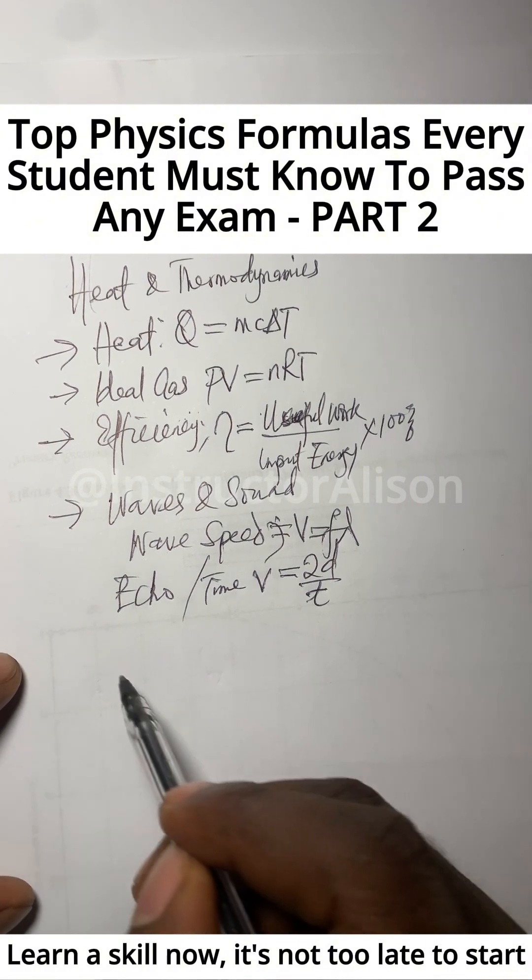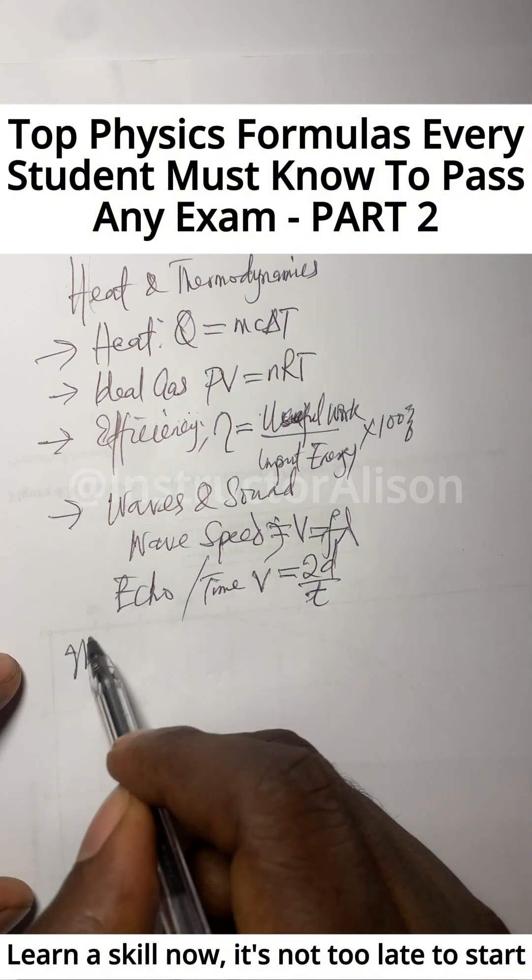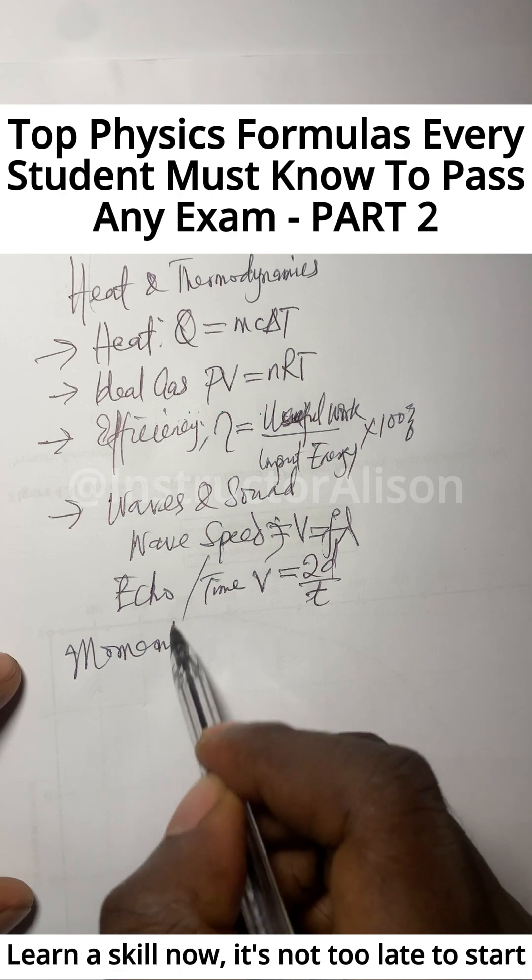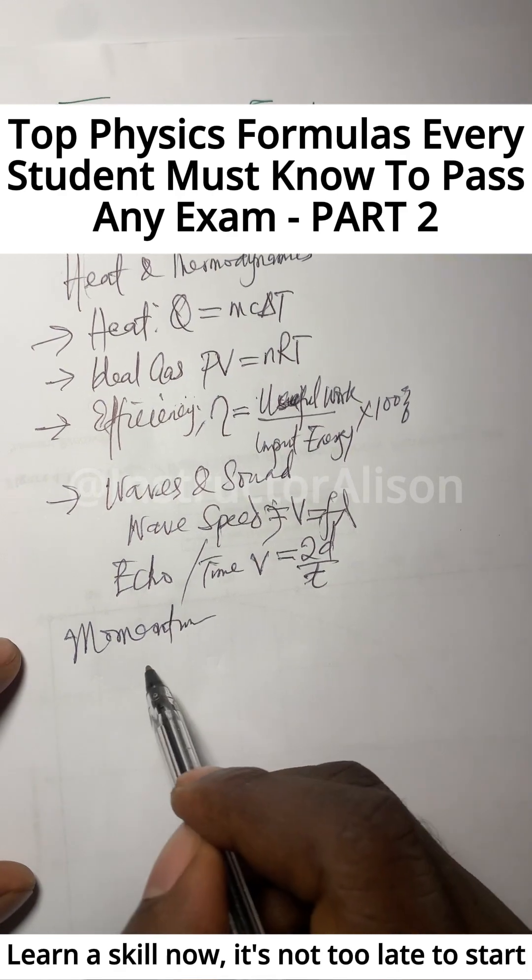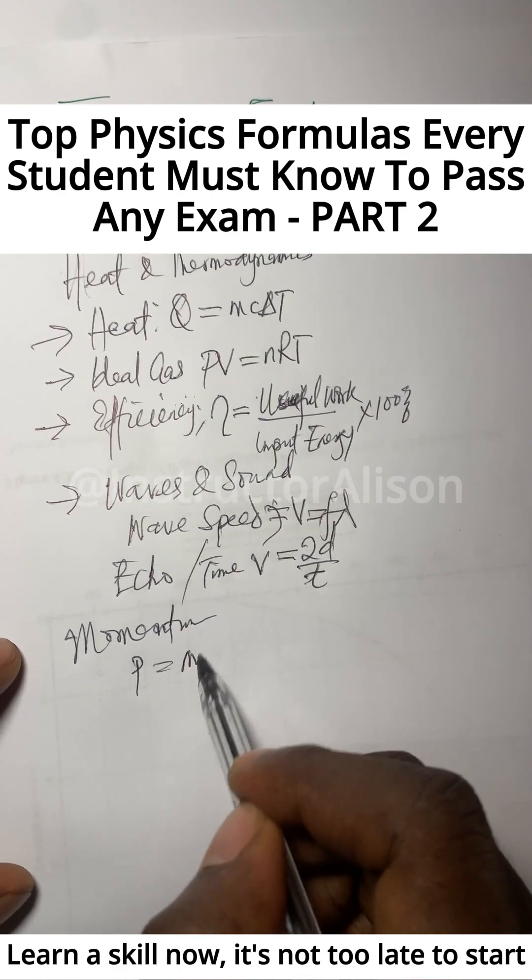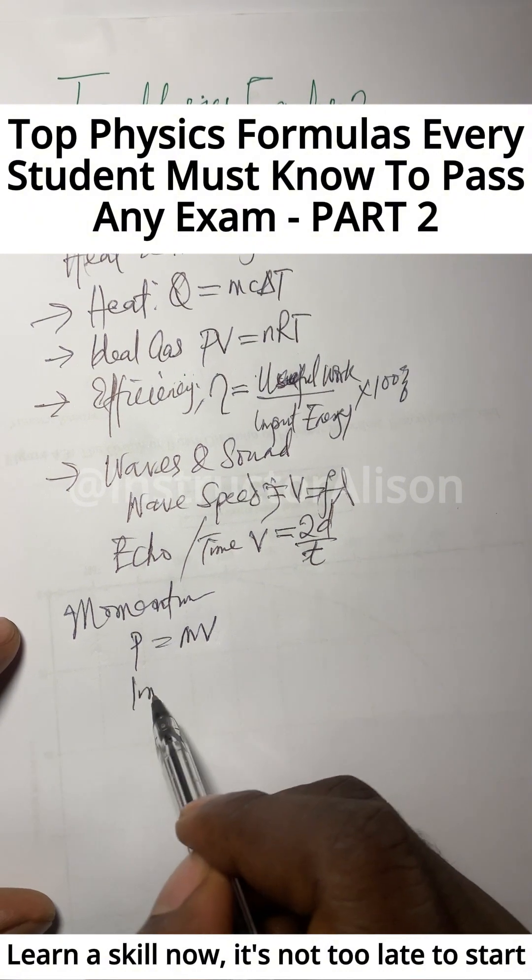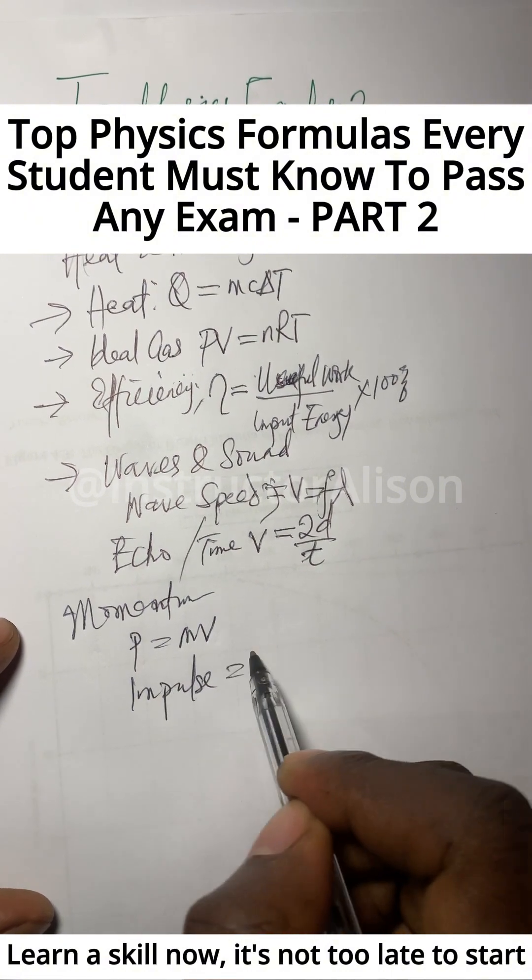Let me add the one we call momentum. Another topic you don't need to joke with. Momentum we have P equal to MV. Under that we have what we call impulse, and impulse has its formula to be force times time.